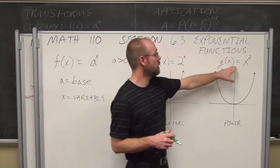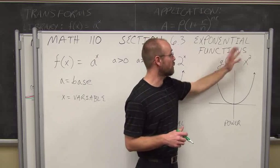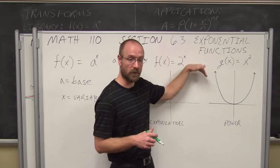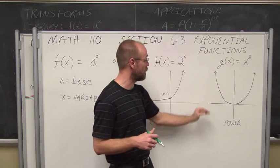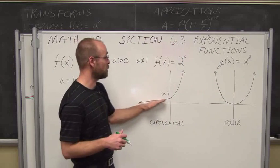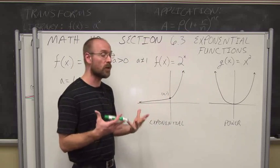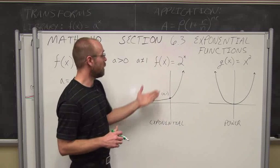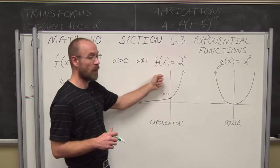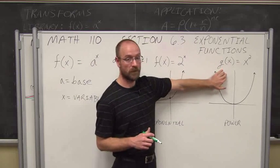If we look at our power function, our variable is the base in this case. Recalling all our rules of power functions, yes, this is going to increase, but it's not constantly increasing — on the negative side of x it's actually decreasing in some areas and increasing in others. If we look at our exponential function, it's always increasing or always decreasing, but only one direction. An exponential function will grow much, much faster than a power function.